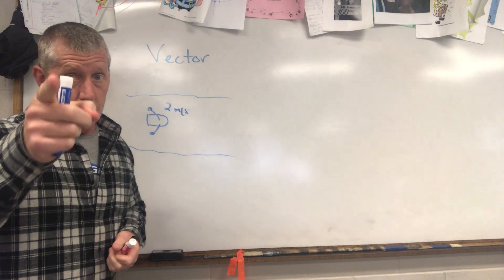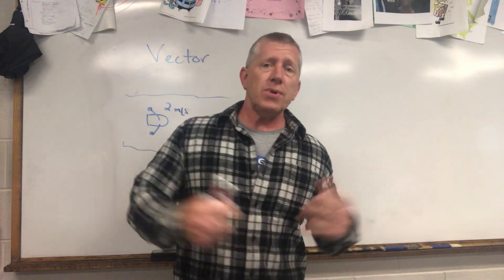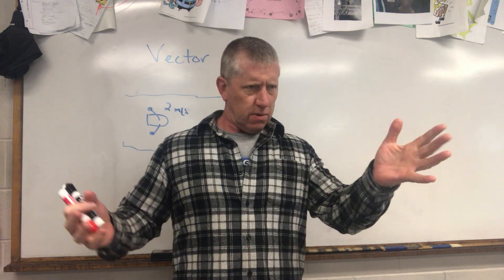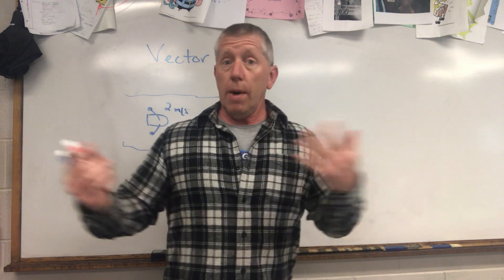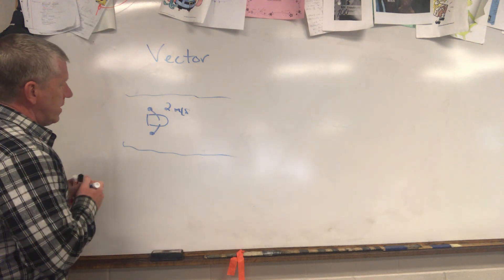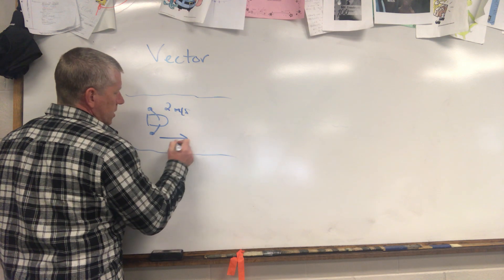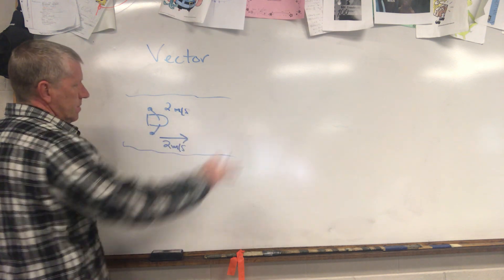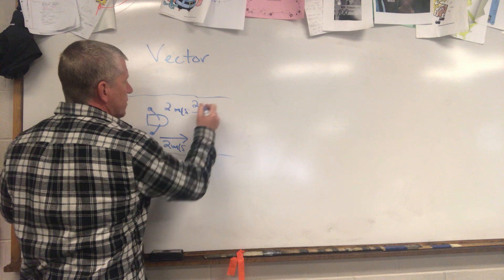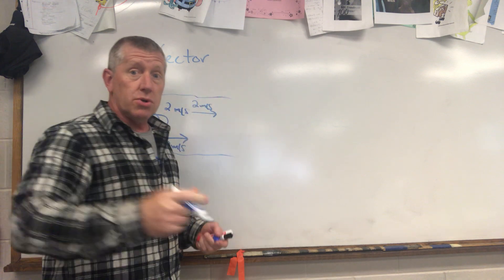Let's say you're rowing downstream with a velocity of two meters per second. If you're in a lake with no current, you're rowing at two meters per second. But the stream is also moving at two meters per second downstream. Notice: a velocity of two meters per second downstream — I attach the direction, making it a vector. From my frame of reference on the side of the stream, I would see you moving with a combination of those two velocities — four meters per second.